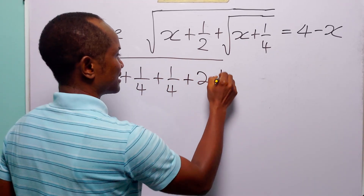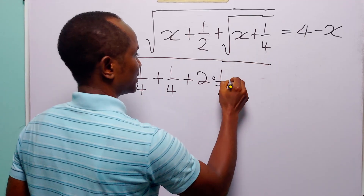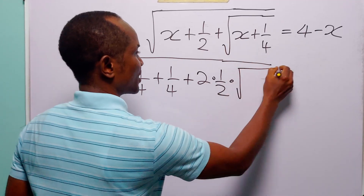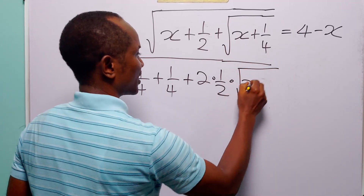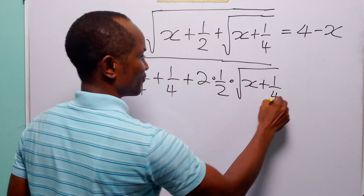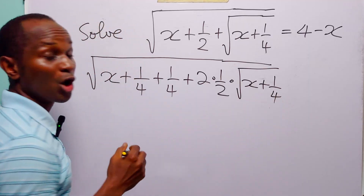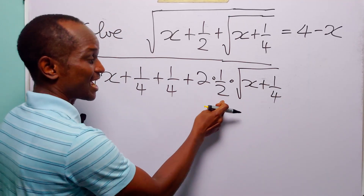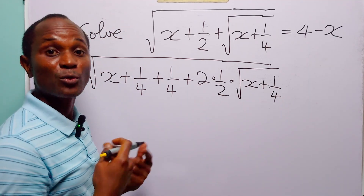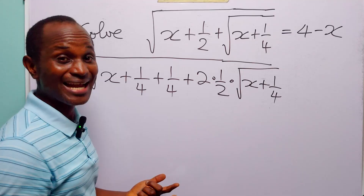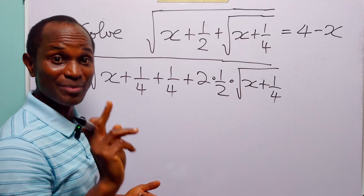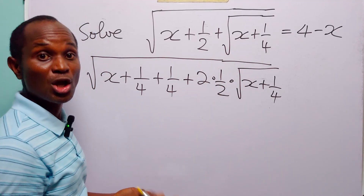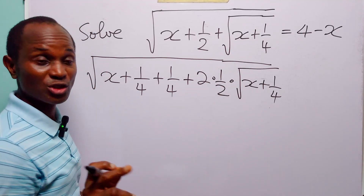Of course you know that 2 times one-half is equal to 1, and when you multiply any quantity by 1 it remains the same.